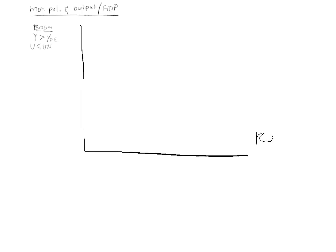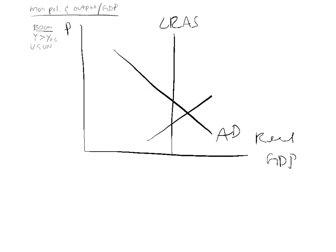Real GDP and the price level. Long run aggregate supply. Aggregate demand. Short run aggregate supply.